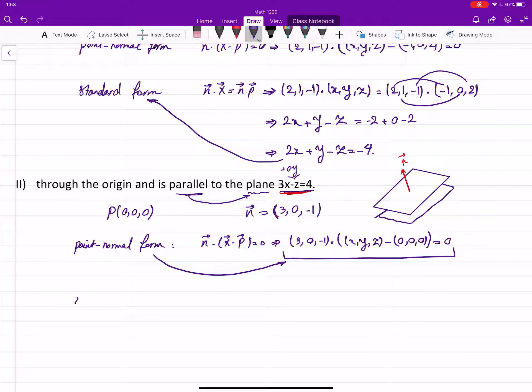How about the standard form? Well, for the standard form, you always start with this equation: n·x = n·p. Well, n here is (3, 0, -1)·(x, y, z) equals n·p. Again, (3, 0, -1) dot p, where p is the origin which has the coordinates (0, 0, 0).